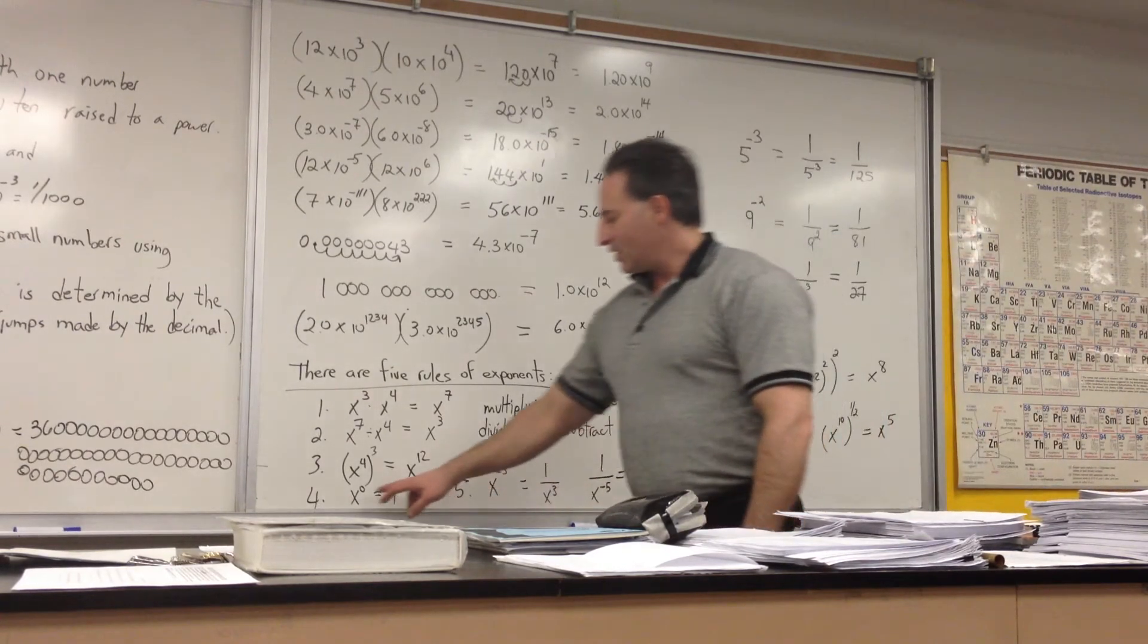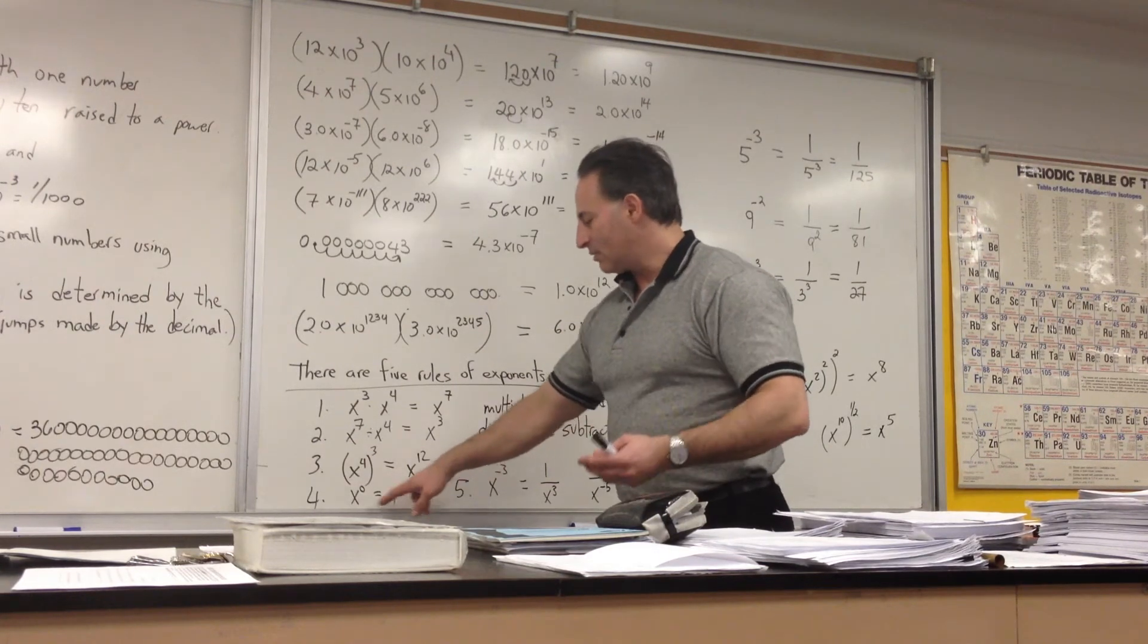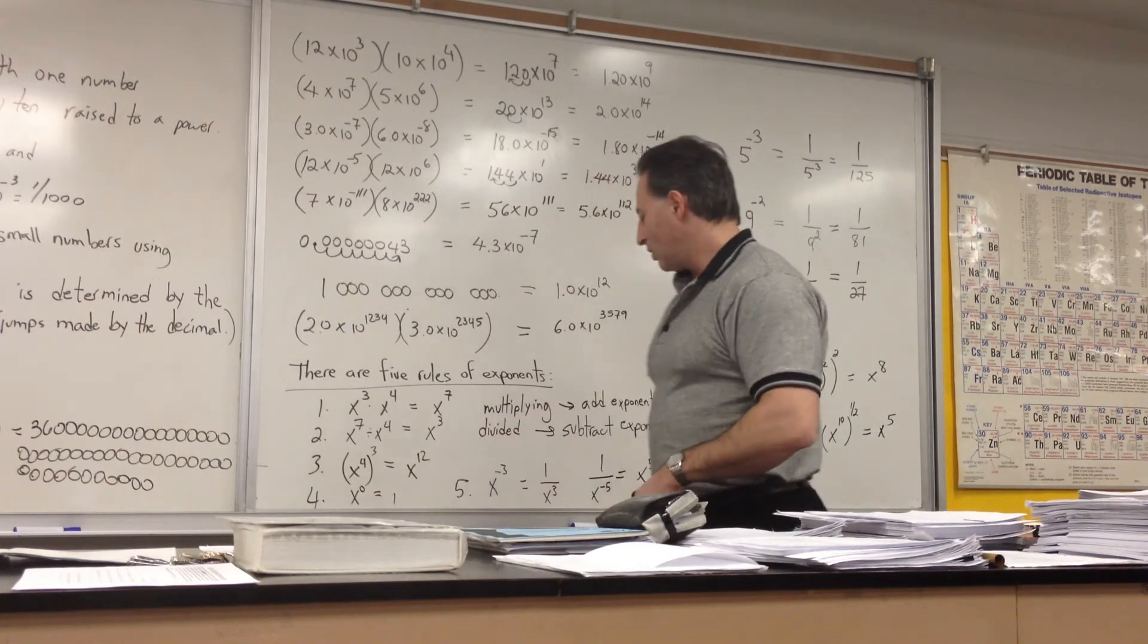x to the power of 0 is 1. Any number raised to the power of 0 equals 1. 1 million raised to the power of 0 will give you 1.